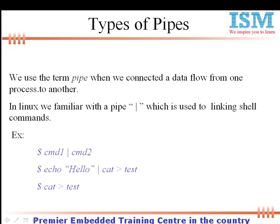We use the term pipe when we connect a data flow from one process to another. Like a normal water pipe makes water flow from one place to another, or electrical wires feed from one end to another — in programming we use the term pipe whenever data flow happens from one process to another. In Linux we are familiar with the pipe symbol used to link various shell commands, like Command 1 pipe Command 2.